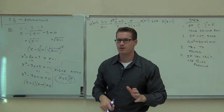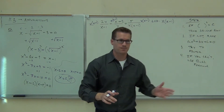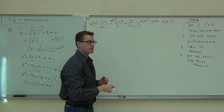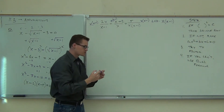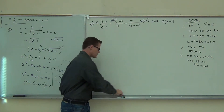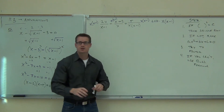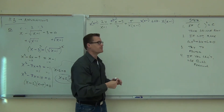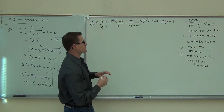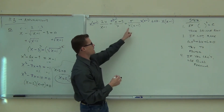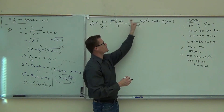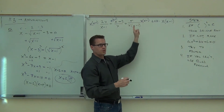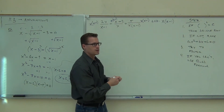And then cancel stuff out — that's the best part, because we get to eliminate all of our denominators. If you do this and you still have denominators, you've done something wrong. You should eliminate all of them. Let's work on the easy side first. What do we get out of this whole thing? 5.